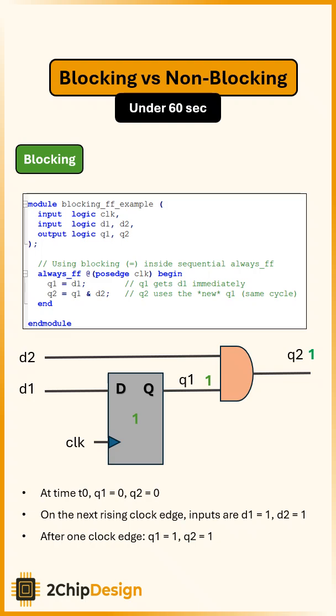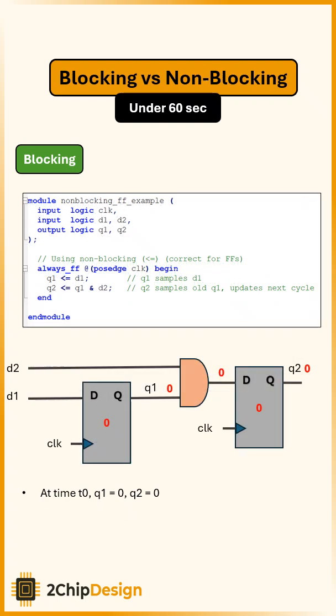Now let's look at a similar design, but this time written with non-blocking assignments. At time 0, Q1 is 0 and Q2 is 0. On the next rising clock edge, D1 is 1 and D2 is 1. After the clock, Q1 updates to 1, but Q2 stays 0 because it used the old value of Q1 before the update.